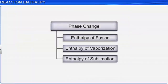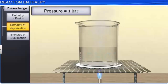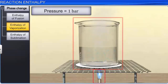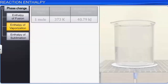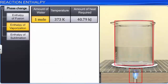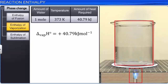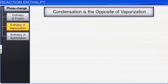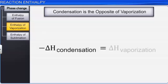The amount of heat required to convert one mole of a liquid into its vapor state at constant temperature and under standard pressure is called its standard enthalpy of vaporization or molar enthalpy of vaporization. For example, the amount of heat required to convert one mole of water into vapor at 373 Kelvin is 40.79 kilojoules. Thus, the molar enthalpy of vaporization of water is +40.79 kJ/mol. Condensation is the opposite of vaporization, so the enthalpy of condensation has the same value as enthalpy of vaporization but with the opposite (negative) sign.